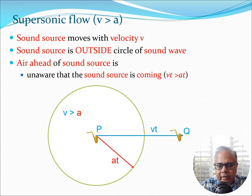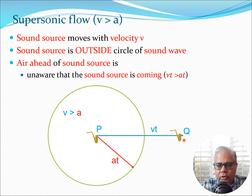Now this picture changes dramatically if we start moving at a speed which is greater than the speed of sound. So in that case the velocity v is greater than a, the speed of sound. In this case, since v is greater than a, the sound source has gone outside this circle and has reached point Q, whereas the sound wave itself is stuck at distance at, given by the circumference of the circle. So the sound source has actually gone outside of the circle created by the sound wave.